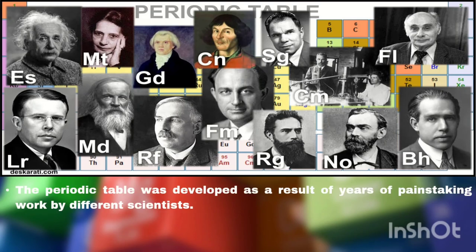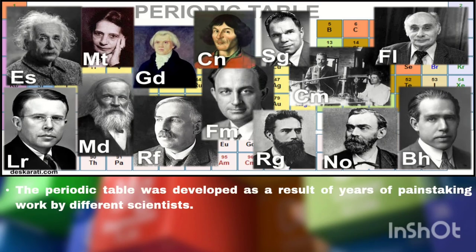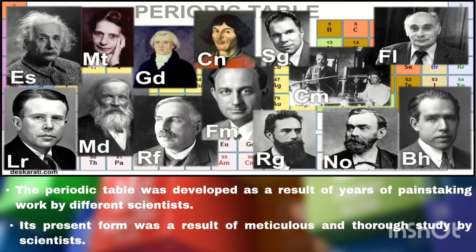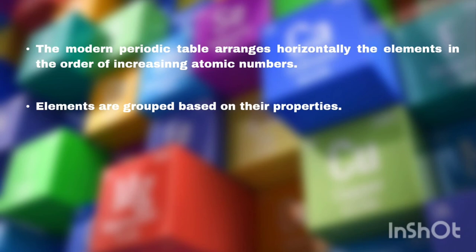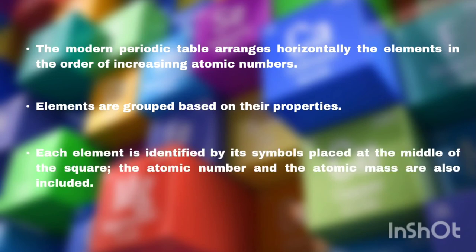Let's sum up what we have learned today. The periodic table was developed as a result of years of painstaking work by different scientists, and its present form was a result of meticulous and thorough study. The modern periodic table arranges elements horizontally in the order of increasing atomic numbers. Elements are grouped based on their properties. Each element is identified by its symbol placed at the middle of the square, and the atomic number and the atomic mass are also included.